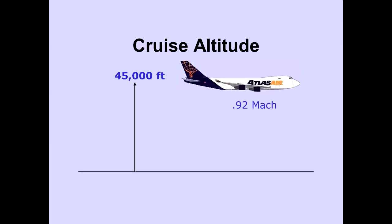The 747-400 cruises at altitudes of up to 45,000 feet. Maximum speed is 0.92 Mach.